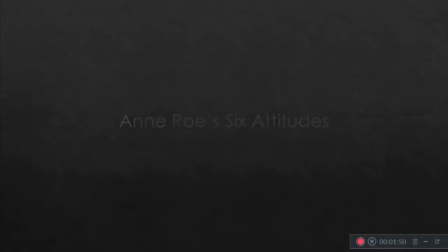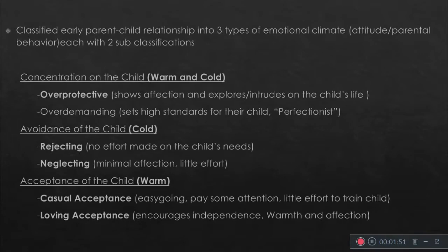So what are Ann Roe's six attitudes? These are classified into three types of emotional climates — attitudes of parental behavior — each with two classifications. First would be warm and cold, which focuses on the concentration of the child.